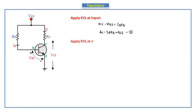Next, applying KVL at the output side, we get equation number two: Vcc minus Vce = Ic·Rc. This is the output equation.